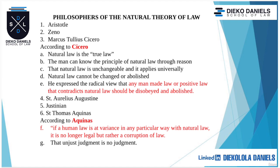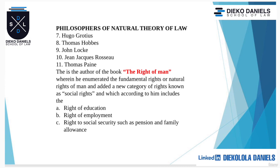We also look at other philosophers: Hugo Grotius, Thomas Hobbes, John Locke, Jean-Jacques Rousseau, and Thomas Paine. One thing notable about Thomas Paine is that he is the author of the book The Rights of Man. In that book, he enumerated the fundamental rights or natural rights of man and added a new category of rights known as social rights, which includes the right to education, right to employment, and right to social security such as pension and family. There are first generation rights, second generation rights, and third generation rights — I'll be teaching that when teaching constitutional law.